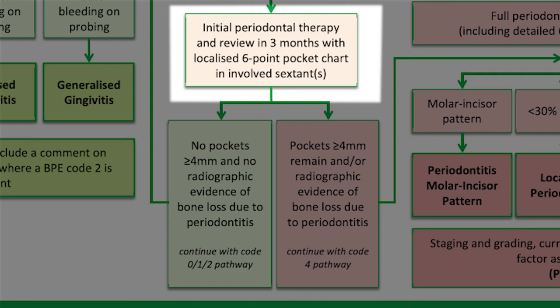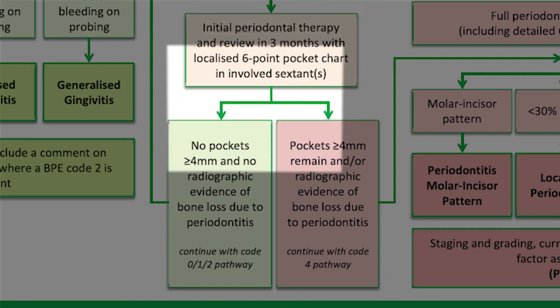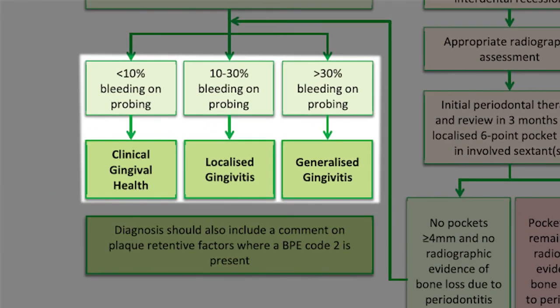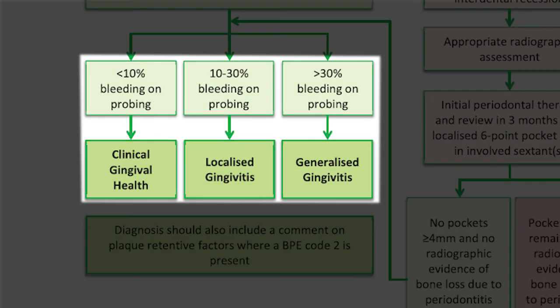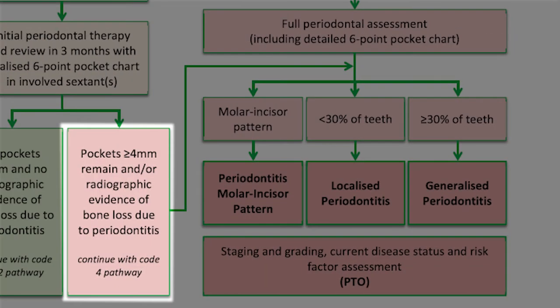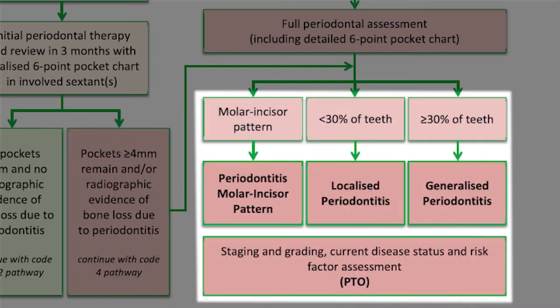So now let's discuss forming your diagnosis. If they had scores of 3 initially but after initial therapy had no pockets deeper than 4mm and no radiographic evidence of bone loss, you can diagnose them using the simpler system of BPEs of 0, 1 and 2. However, if you find pockets deeper than or equal to 4mm or bone loss or both, you proceed to the code 4 pathway. And if your patient had a BPE of 4 from the beginning, you also diagnose them with this pathway.